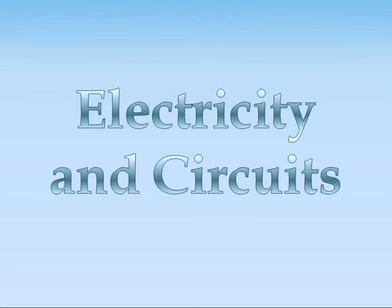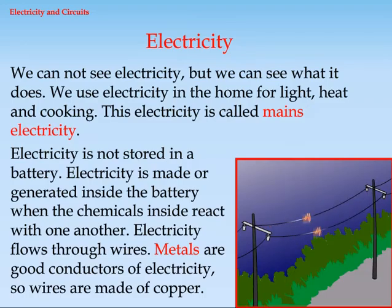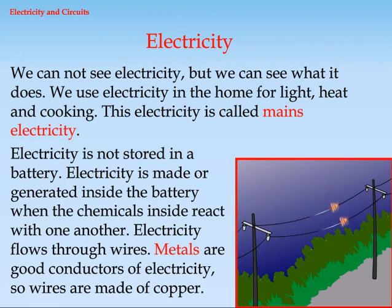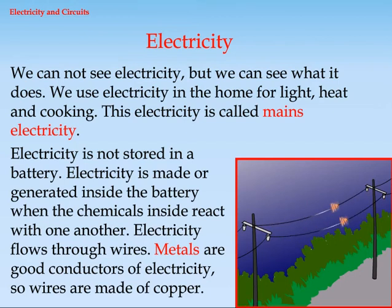Electricity and circuits. We cannot see electricity, but we can see what it does. We use electricity in the home for light, heat and cooking. This electricity is called mains electricity.